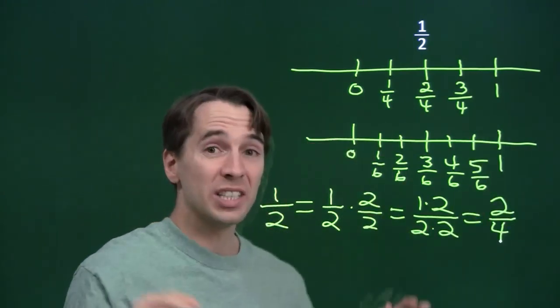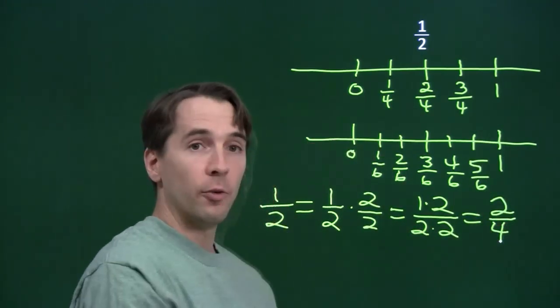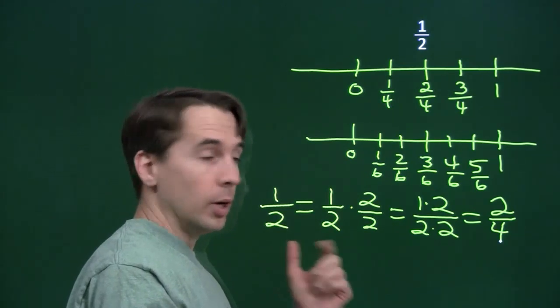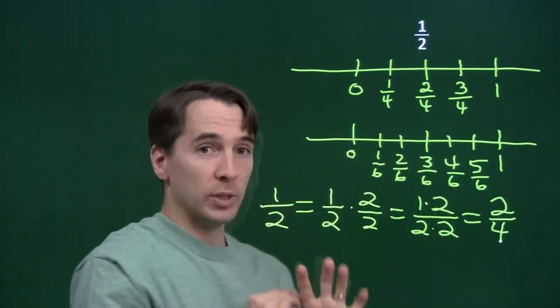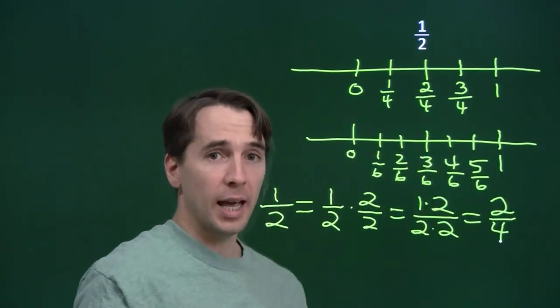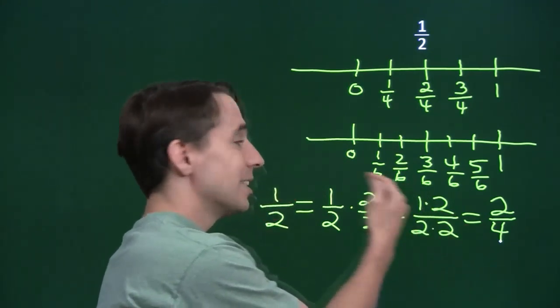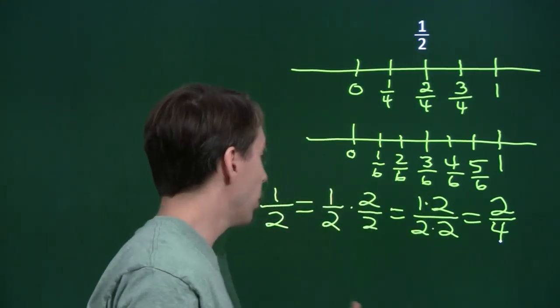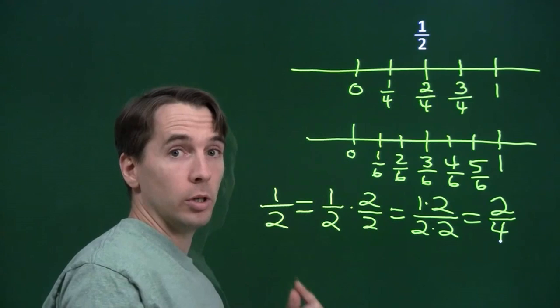When we go in this direction, we say that we're simplifying 2 over 4 as 1 over 2. And when we do that as much as we can, we take out as many common factors as we can, we say that we've written the fraction in simplest form. So 2 over 4 in simplest form is just 1 over 2.